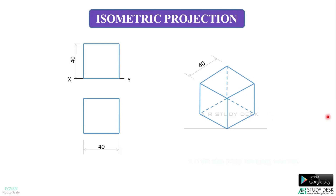Just imagine that you are working in the design department of a company and if you show the engineering drawings or the orthographic projections to the customer, he won't understand anything. Why? Because he may not be an engineer. So, in order to communicate with him easily, you can use 3D drawings like this. Now, before moving to isometric, let me remind you that I will be discussing the entire topic of isometric with the example of a cube.